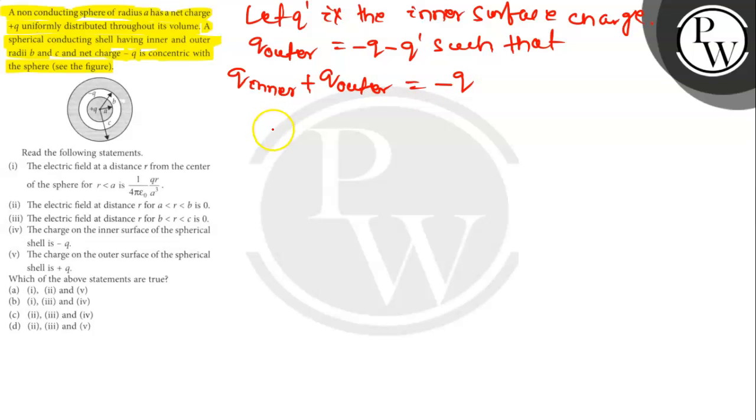So electric field inside the conductor should be 0. So R is greater than B and R is less than C. So in an arbitrary Gaussian surface, electric flux is equal to Q inside divided by epsilon not. E is equal to 0.